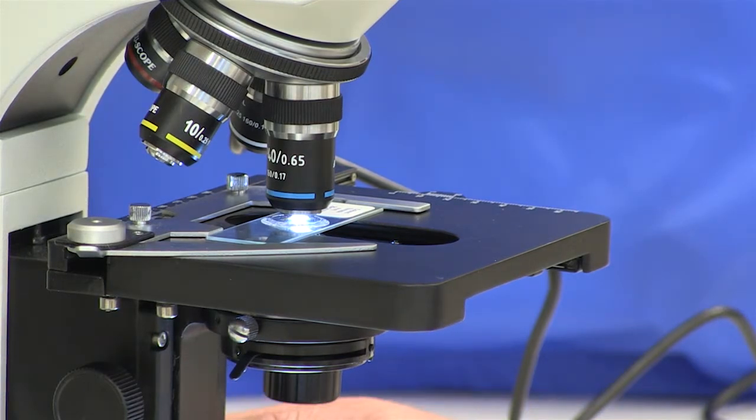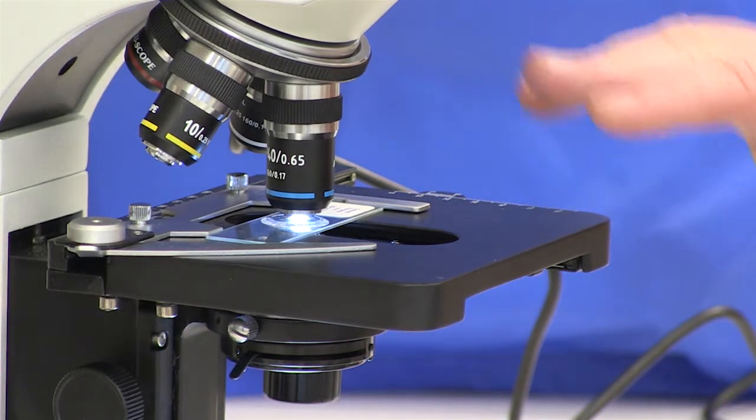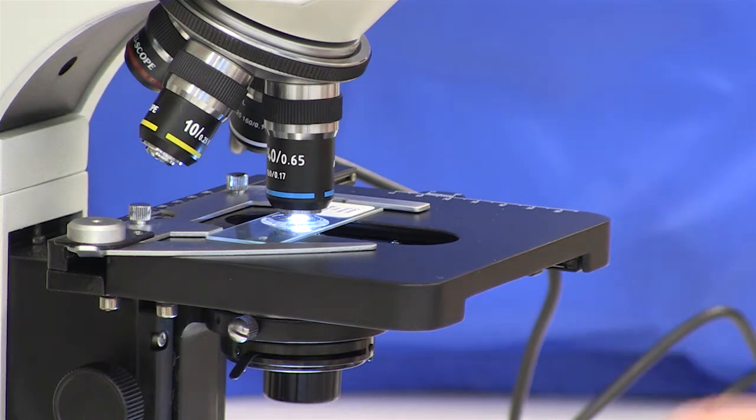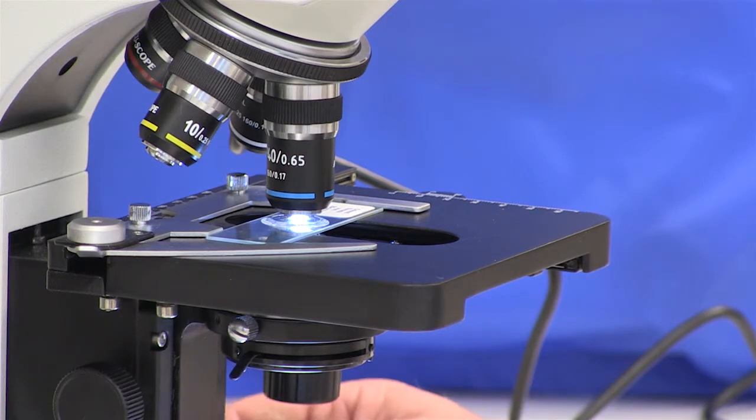Sometimes students will mistakenly use the coarse adjustment knob and they will move the stage so much that it hits the objective. That can break the slide and potentially damage the microscope. So it's very important to remember that we only use the fine adjustment knob when the high power objective is in place.